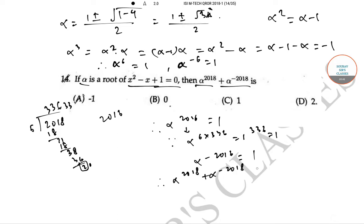So α^2018 + α^(-2018) can be written as α^2016 · α² + α^(-2016) · α^(-2), which simplifies to α² + α^(-2).